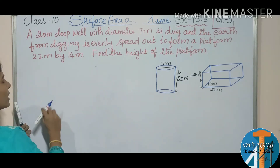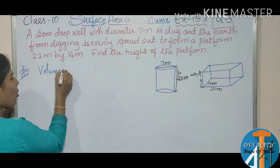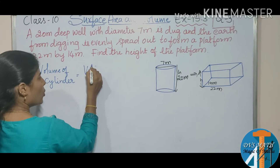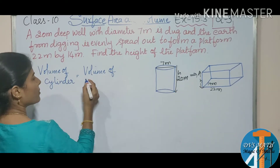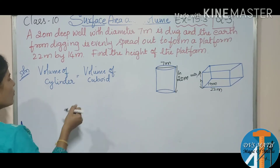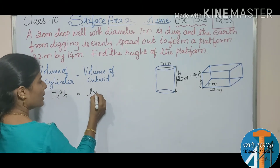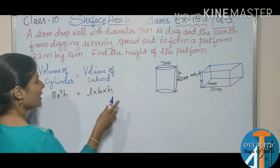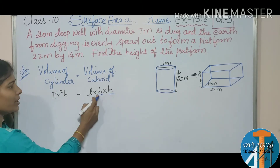Solution: Volume of cylinder is equal to volume of cuboid. The formula is π r² h equals length × breadth × height. We need to find the height of the cuboid, so we shift length and breadth to the left-hand side — they move from multiplied to divided.